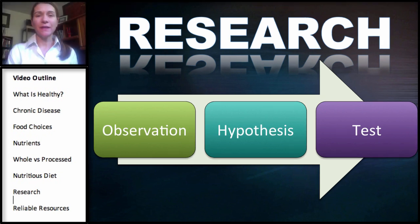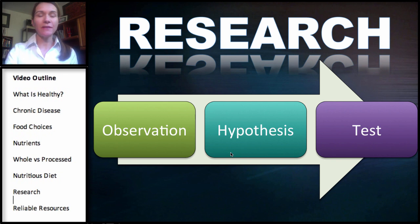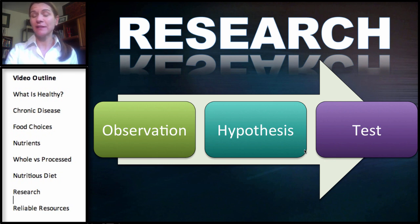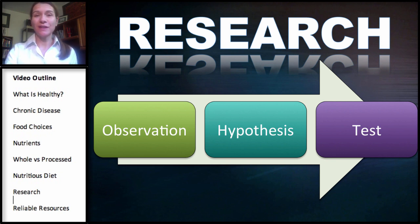The scientific method starts with an observation. A hypothesis or theory is then made based on that observation, and then a prediction is made and an experiment is designed to test the hypothesis. After the experiment is conducted, a conclusion can be obtained.